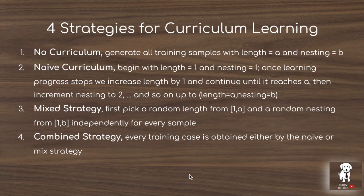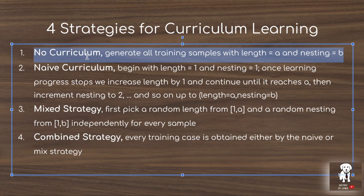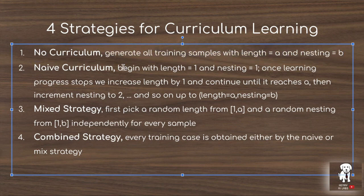The authors explore four curriculum strategies. The first is the baseline with no curriculum, generating all training samples at length equals A and nesting equals B — the final target difficulty. This follows statistical learning theory by matching training and test distributions. The second is naive curriculum learning from Bengio et al. 2009: start at length equals one, nesting equals one, and once learning saturates, increment length by one, continuing until reaching length equals A, then increment nesting, and so on.